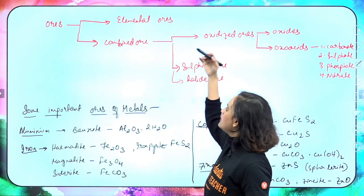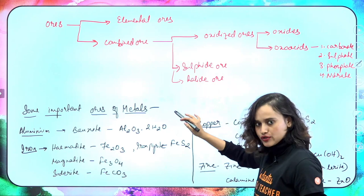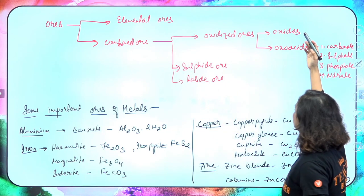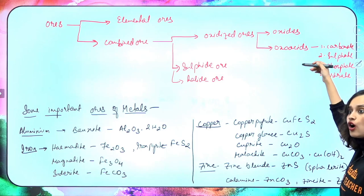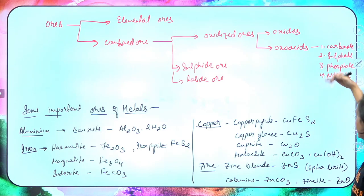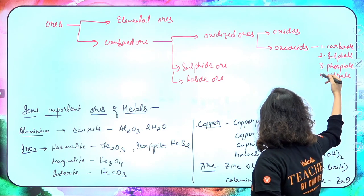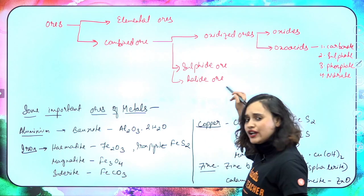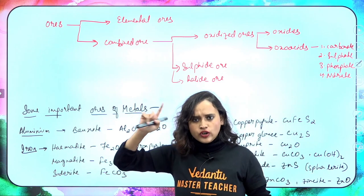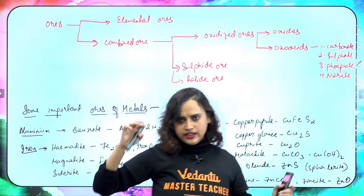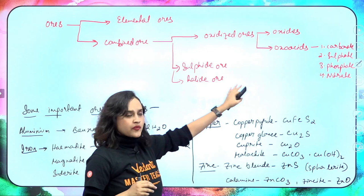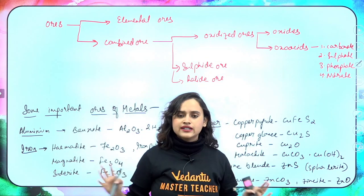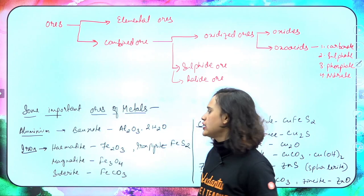Ores can be of two types: elemental ores and combined ores. In combined ores, you have oxidized ores — which include oxides and oxo acids like carbonates, sulfates, phosphates, and nitrates — and you also have sulfide ores and halide ores, where halogens like fluorine and chlorine are combined with the ore. These are the major different kinds of ore.